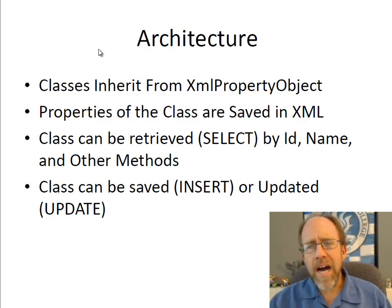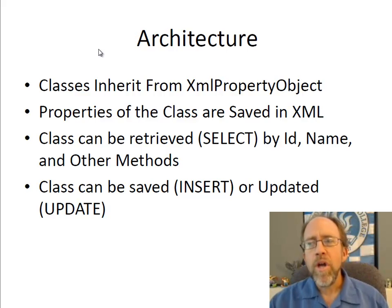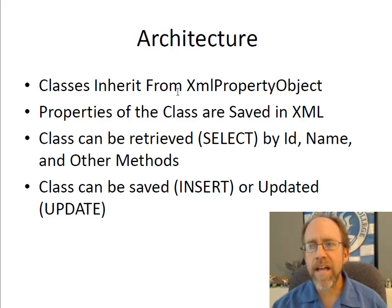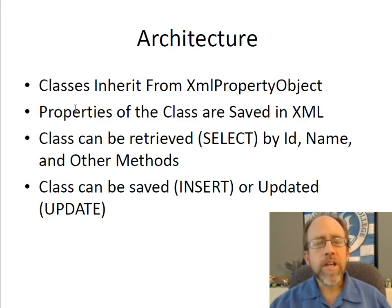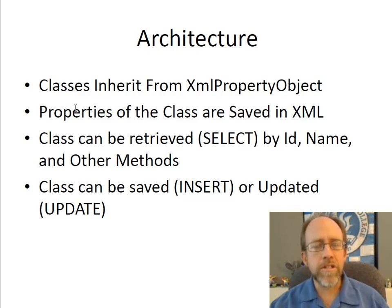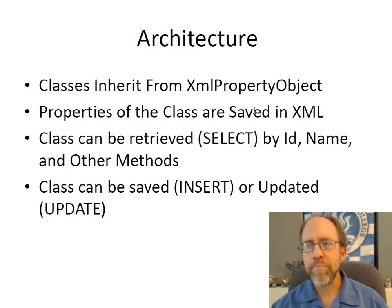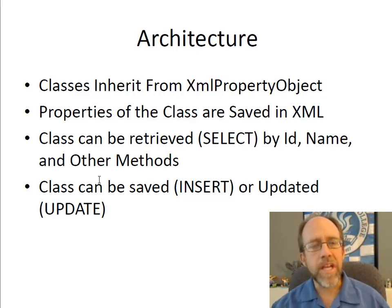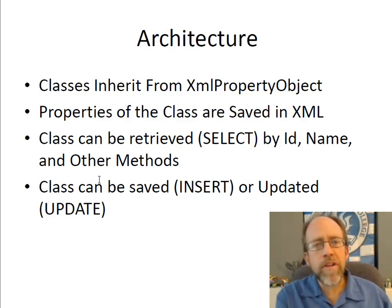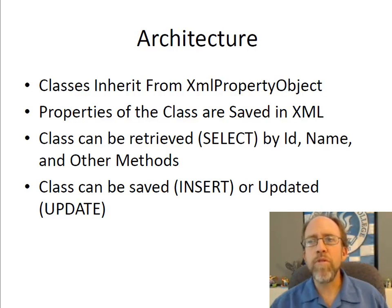The basic concept is that any domain classes — classes that do the work your project needs — will inherit from XMLPropertyObject, that abstract class. Every class you create can have its own properties: strings, integers, whatever. Those properties are converted to XML, serialized, and saved in that table in the single XML data field. The class can retrieve itself, insert itself, and update itself by calling one simple method. All that work on the database backend is taken care of automatically.